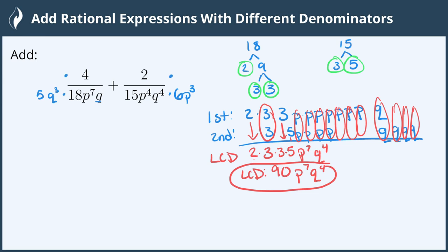Whatever I multiply to the new denominator, I must also multiply to the numerator. So 5q to the 3rd multiplied to the 1st one and 6p to the 3rd for the 2nd one.